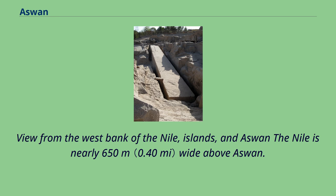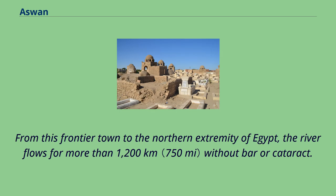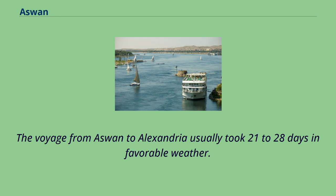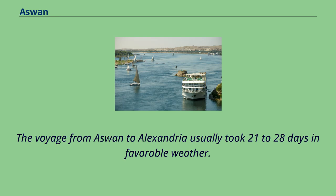The Nile is nearly 650 m wide above Aswan. From this frontier town to the northern extremity of Egypt, the river flows for more than 1,200 km without bar or cataract. The voyage from Aswan to Alexandria usually took 21 to 28 days in favourable weather.